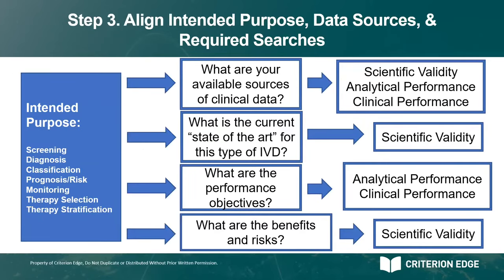Aligning your intended purpose with all of the data sources can help you better define the searches that will be required, and also helps you see where the results of each search will be bucketed into separate required reports. Based on your intended purpose — whether it's screening, diagnosis, classification, or other — you need to know what are your available sources of clinical data. Do you have in-house studies? Have there been published studies? That data could carry over between all three reports, because sources of clinical data could help justify your choice of analyte, but also report on the performance of your competitors in real-world scenarios. If you find published clinical data on your subject device, that would then appear within the analytical performance and the clinical performance reports.